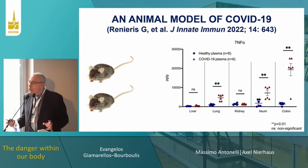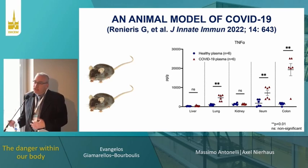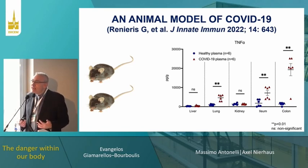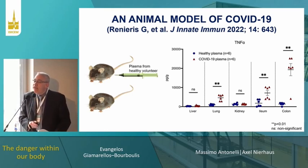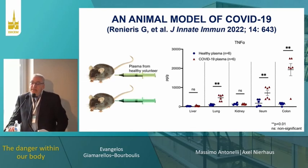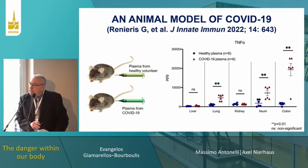Someone might say: how is this possible? We know a humanized model of COVID-19 is difficult because mice lack ACE2. But we didn't need ACE2-transformed mice — we infused the DAMPs IV: either plasma from a healthy volunteer or plasma from a patient who developed severe respiratory failure. When sacrificed, the mice showed increased TNF production in the lung and in the gut, with no changes in kidney or liver.